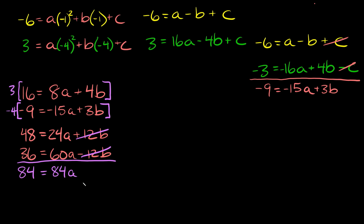We're down to one equation with one unknown: 84 = 84a. Dividing both sides by 84, we get a = 1. We finally found one of our variables.